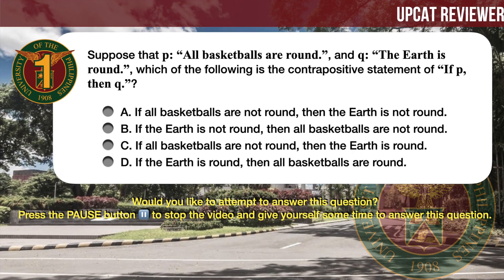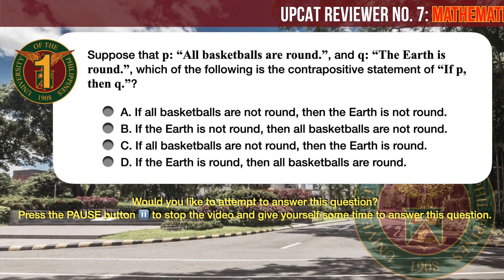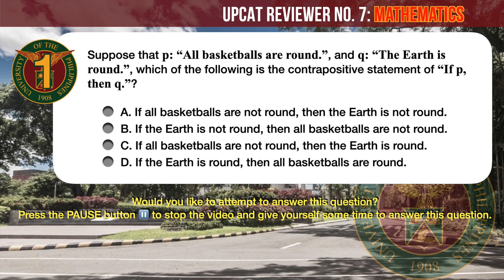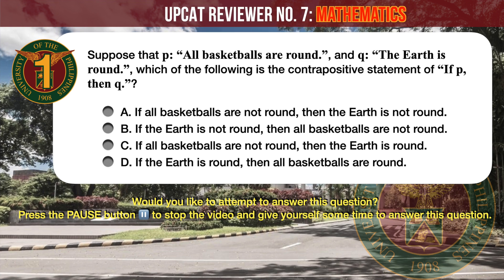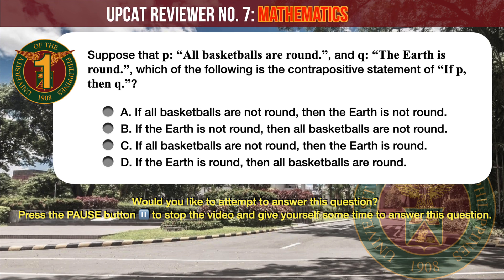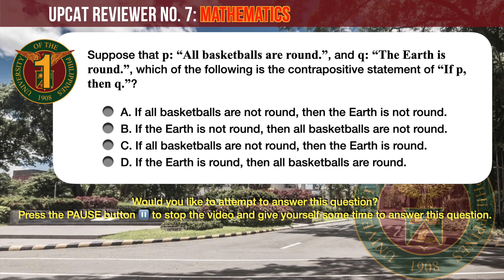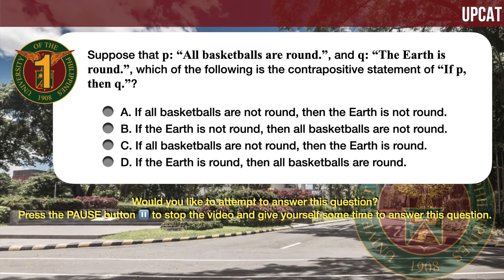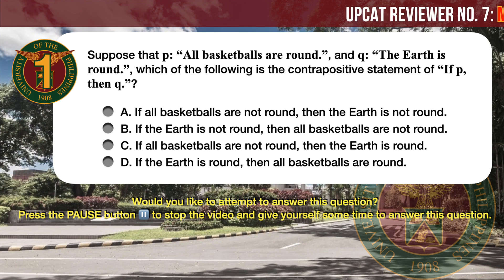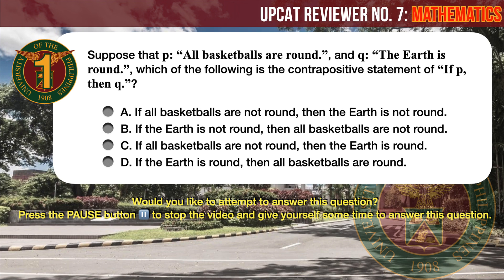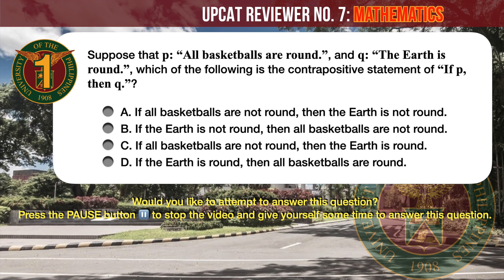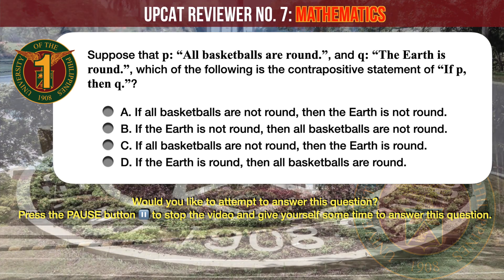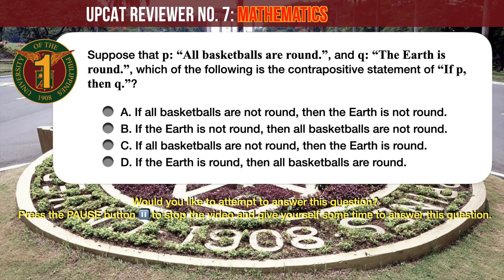Question number 1. Suppose that the hypothesis P is 'all basketballs are round,' and the conclusion Q is 'the earth is round.' Which of the following is the contrapositive statement of 'if P, then Q'? A. If all basketballs are not round, then the earth is not round. B. If the earth is not round, then all basketballs are not round. C. If all basketballs are not round, then the earth is round. D. If the earth is round, then all basketballs are round.